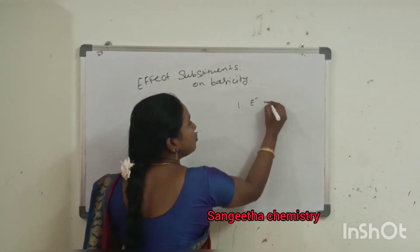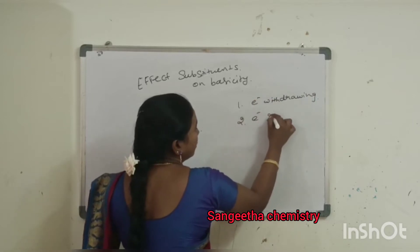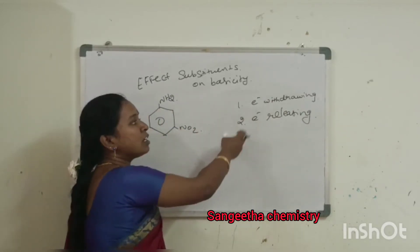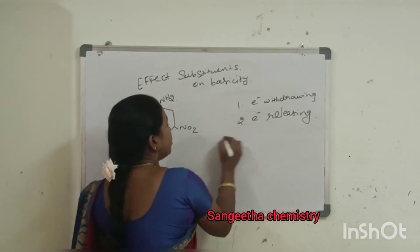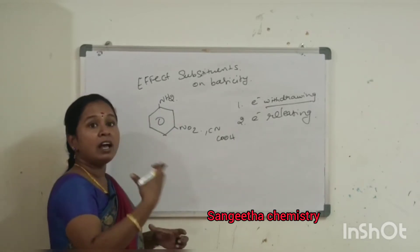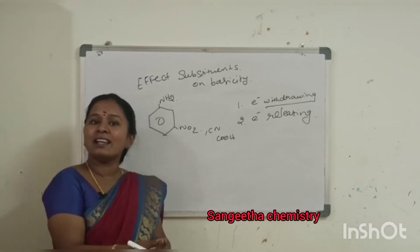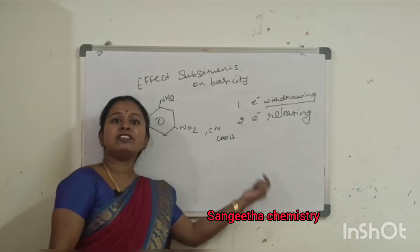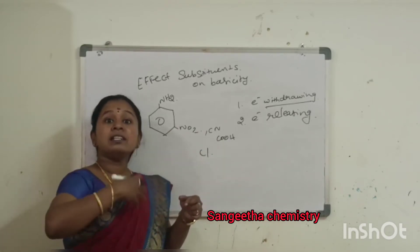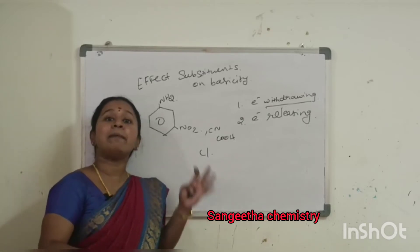We have to discuss about electron withdrawing groups and electron releasing groups. Because of lack of electrons, it is less basic. If you add an electron withdrawing group, the basic character will be decreased compared to aniline.